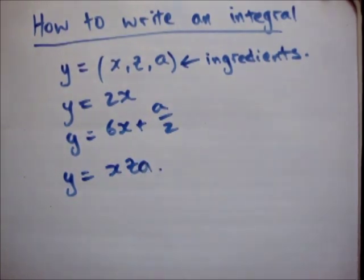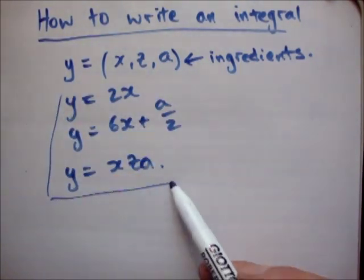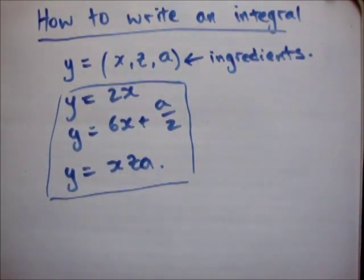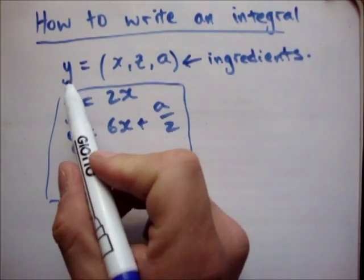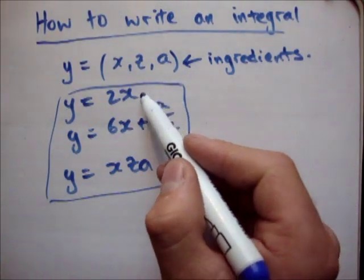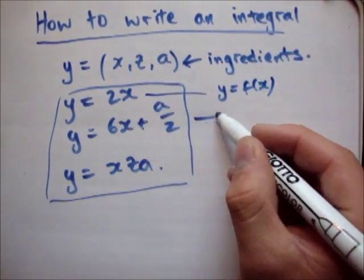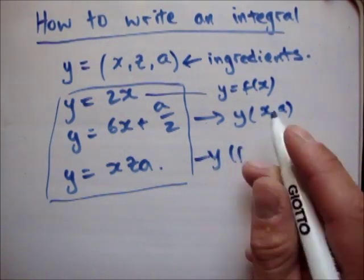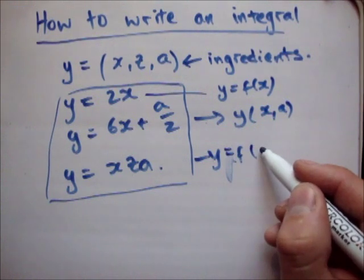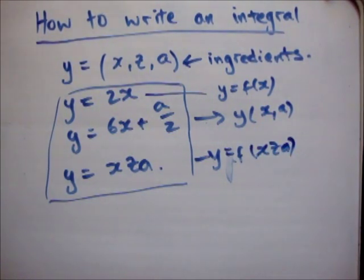So this up here specifies the variables or the ingredients, and these might specifically tell you exactly how we're going to get y. Like I said, in general y is a function of x, z, a. Here y is only a function of x. Here y is a function of x and a. And here y is a function of x, z, a.